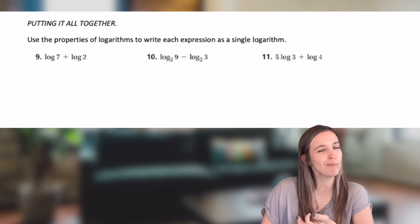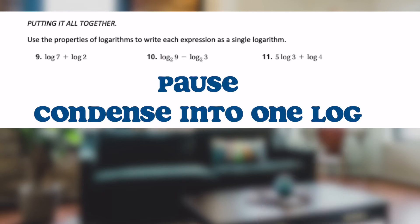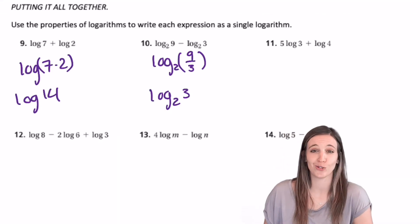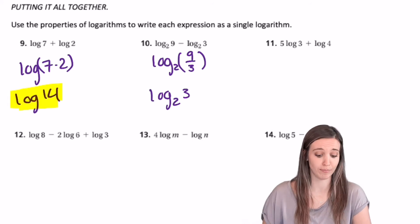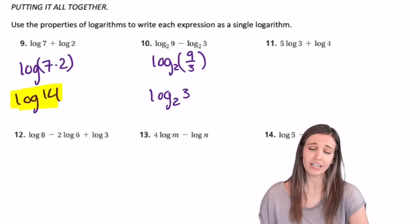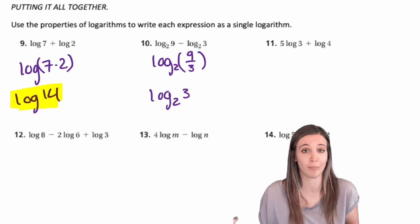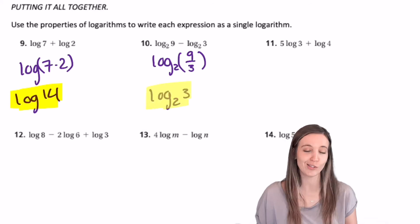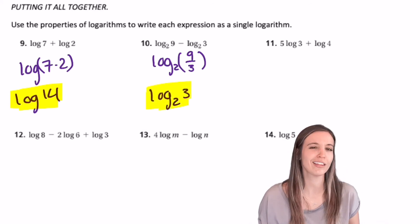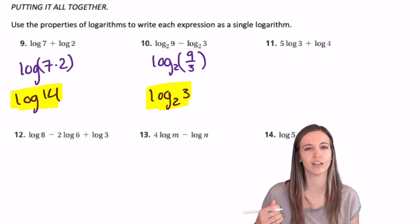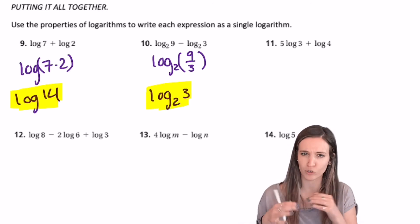Let's pull this all together. Why don't you try the first 3? You might need my help on the third one. Well, number 9, I just used the product property and got log of 7 times 2, which is log of 14. Number 10, I used the quotient property. Log base 2 of 9 divided by 3 is log base 2 of 3. So we can think about it. If it's simple math that we can do, we don't need to write that middle step. But if there's more going on, make sure we're writing our steps.